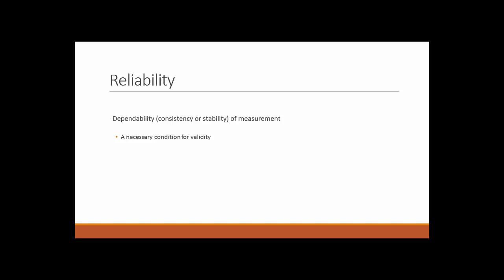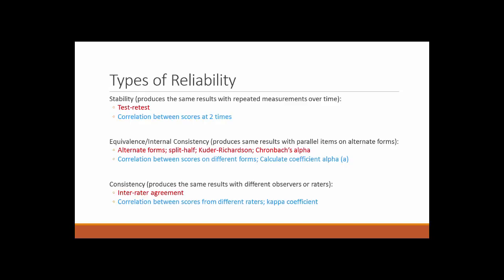Quantitatively evidence-based findings and research is necessary to make many decisions that we do throughout the day. Reliability is the dependability, meaning the consistency or stability of a measurement — a necessary condition for validity. There are different types of reliability. Stability produces the same results with repeated measures over time. Equivalence, or internal consistency, produces the same results with parallel items on alternative forms.